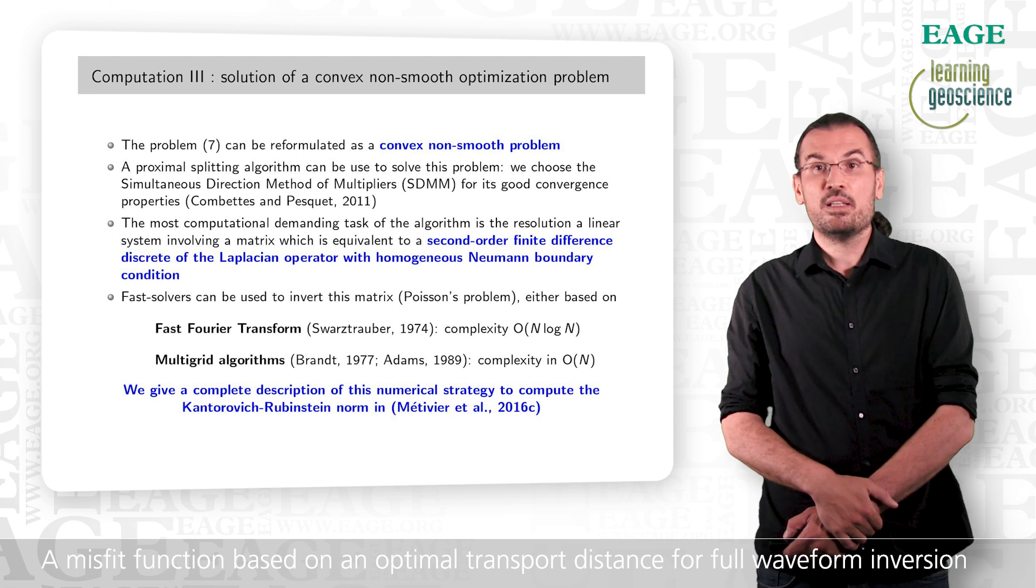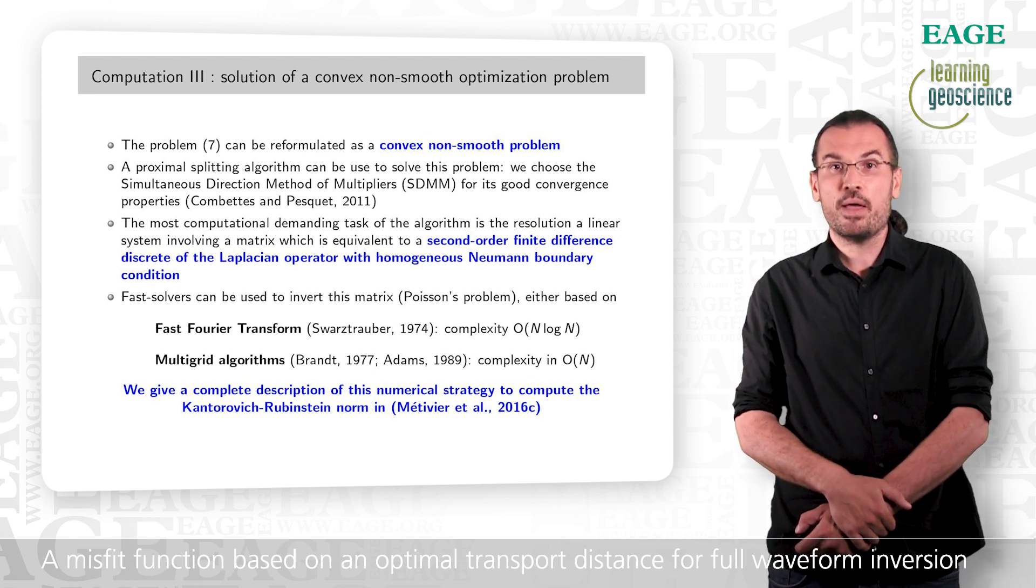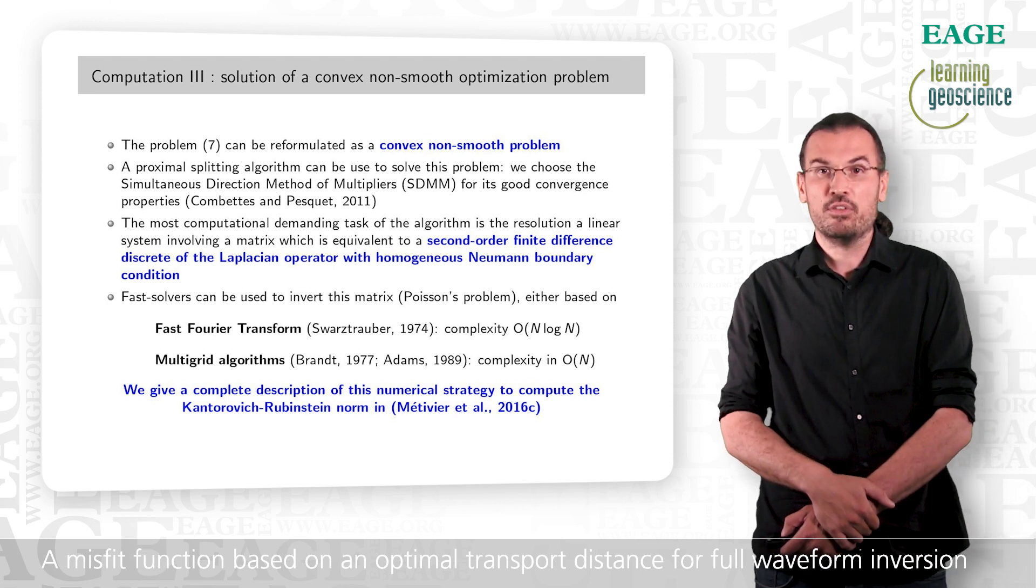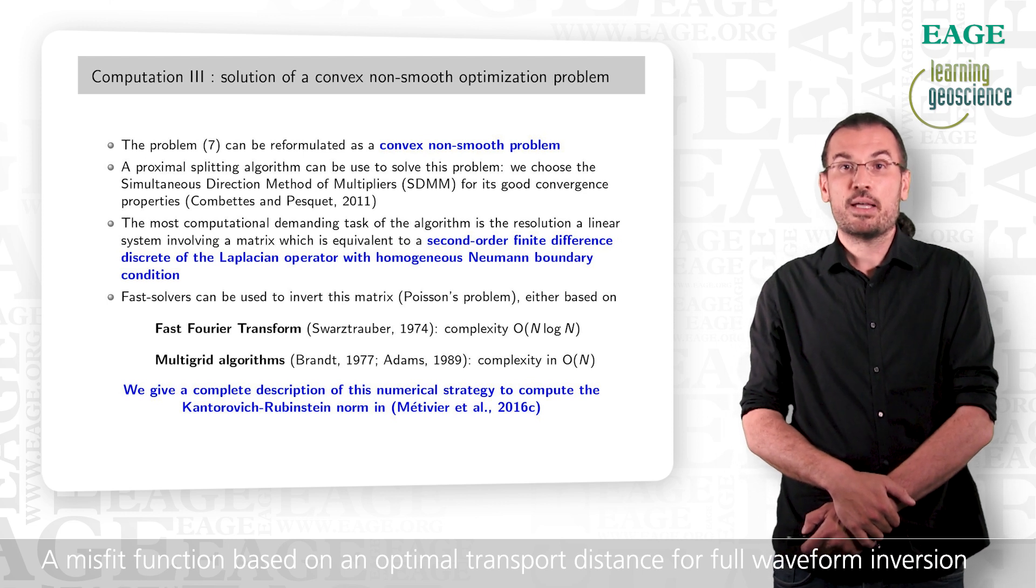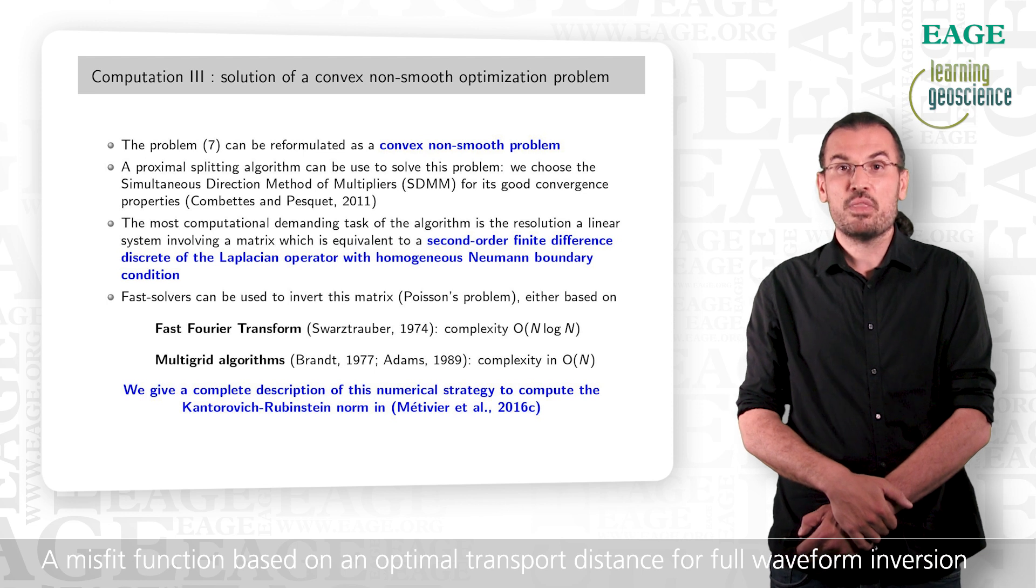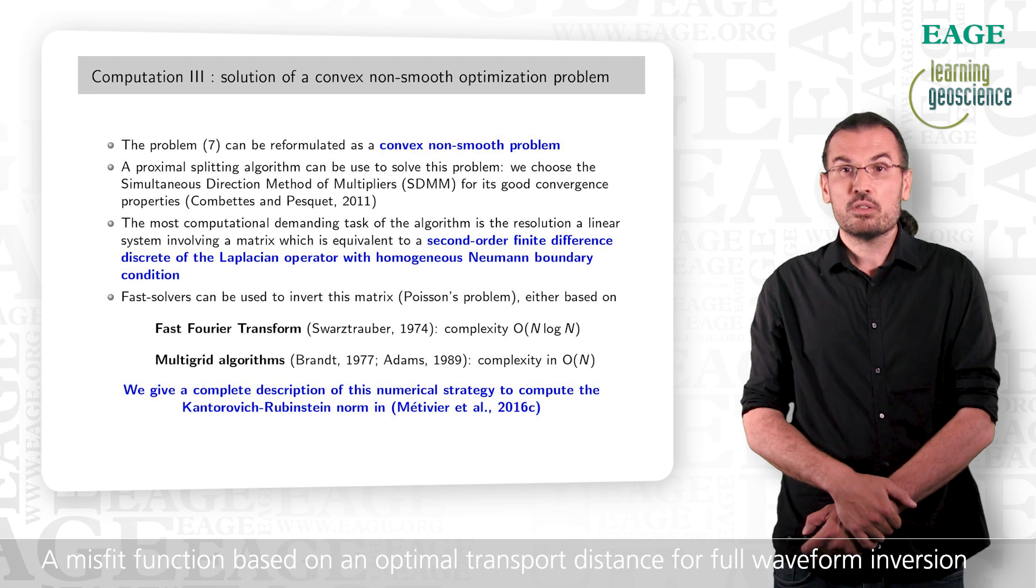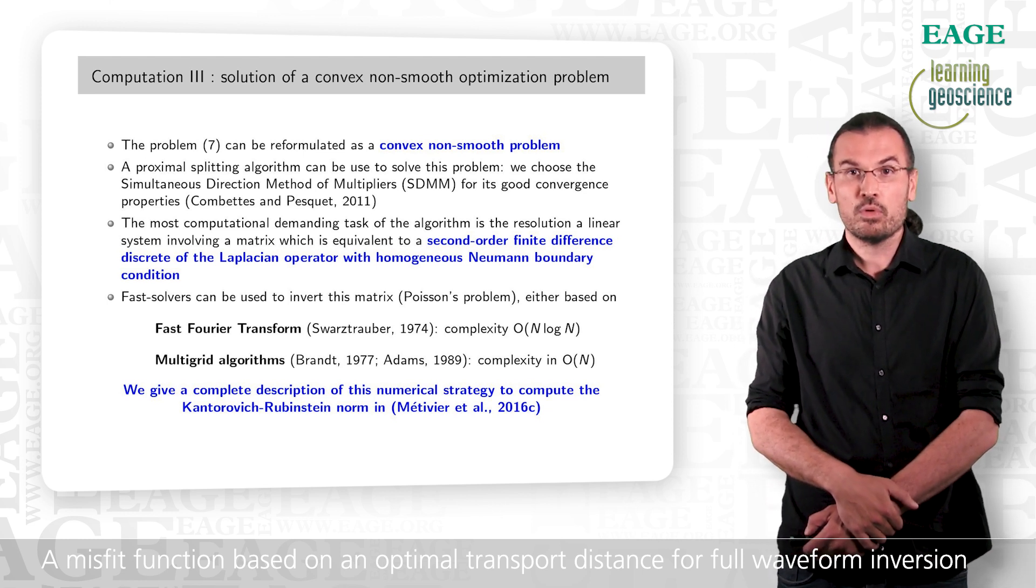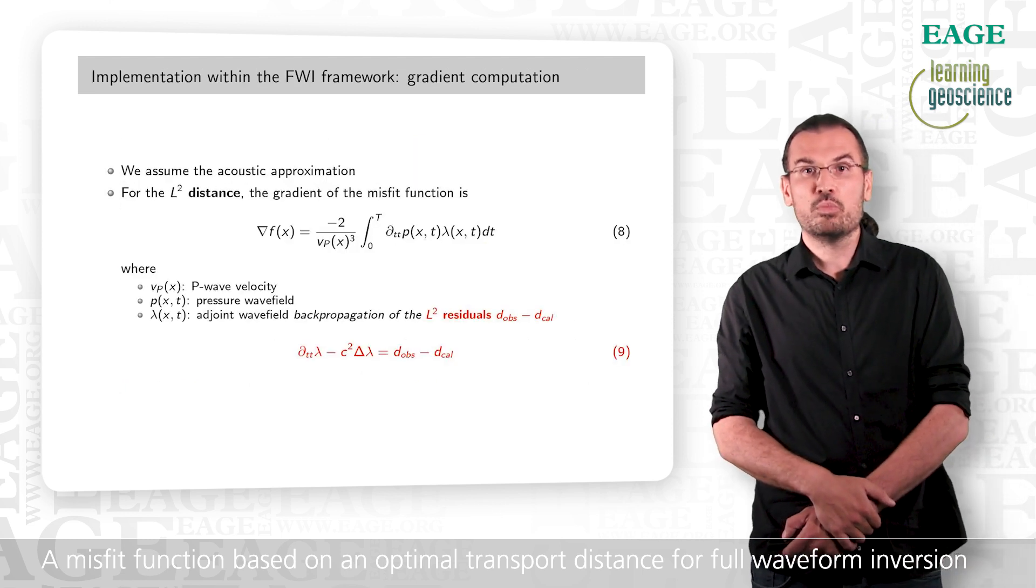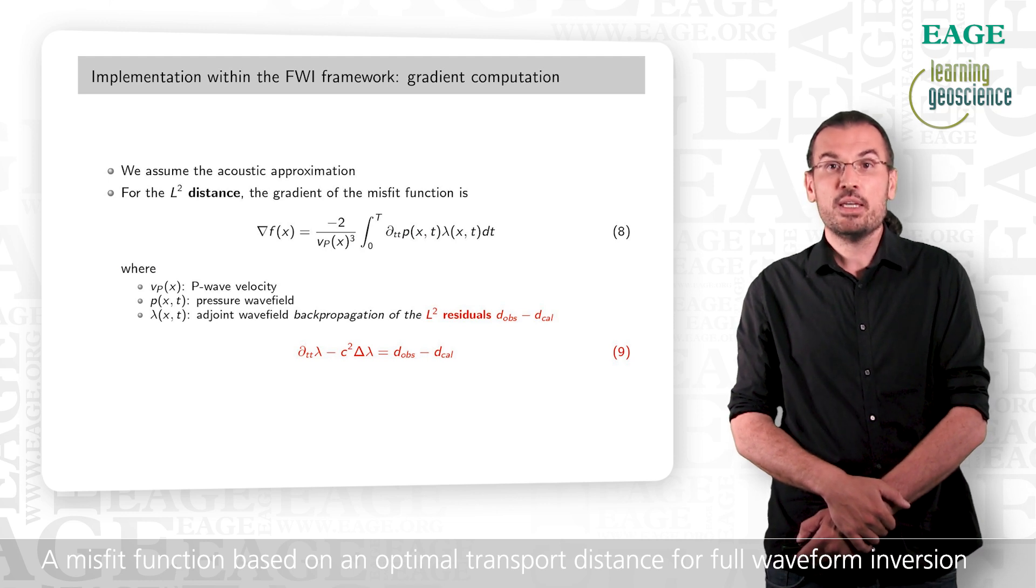We can then reformulate our simplified linear programming problem into a convex non-smooth optimization problem. We solve it through a proximal splitting strategy named SDMM for simultaneous direction method of multipliers. I do not give the details here. Please refer to the review paper of Kumbetz and Peke in 2011. The important things to note is that this algorithm has good convergence properties, and it requires the solution of a linear system at each iteration. We have been able to prove that this linear system is actually equivalent to a discretization of the Dirichlet operator with homogeneous Neumann boundary conditions, for which efficient solvers can be used, either relying on the fast Fourier transform with quasi-linear complexity, or multi-grid techniques with linear complexity. Now that we have an efficient strategy to compute an optimal transport distance that we can apply to seismic data, we need to be able to compute the gradient of the corresponding misfit function, as it is the key ingredient to perform full waveform inversion.